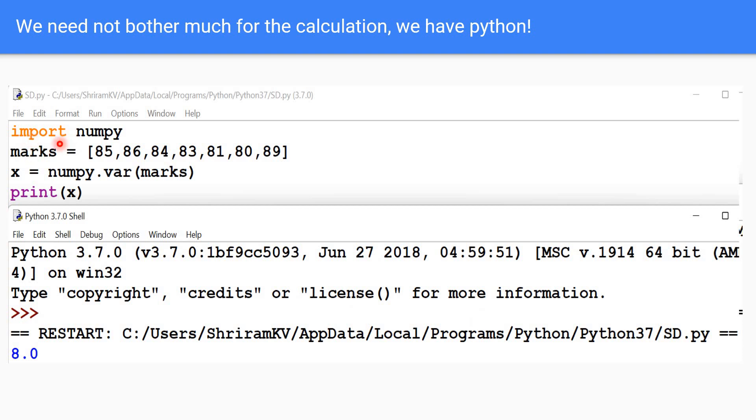So, import NumPy as usual. Marx equal to, I have assumed these values. Now, x is equal to NumPy dot VAR. We are calling this VAR and we are passing Marx as argument. We are printing the result and the value of the variance is 8. That is all.